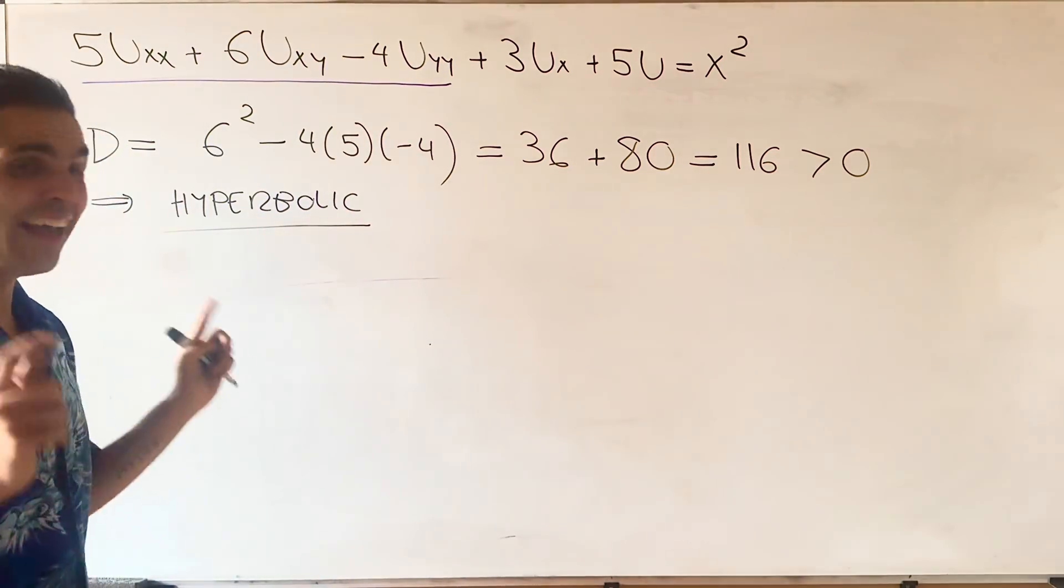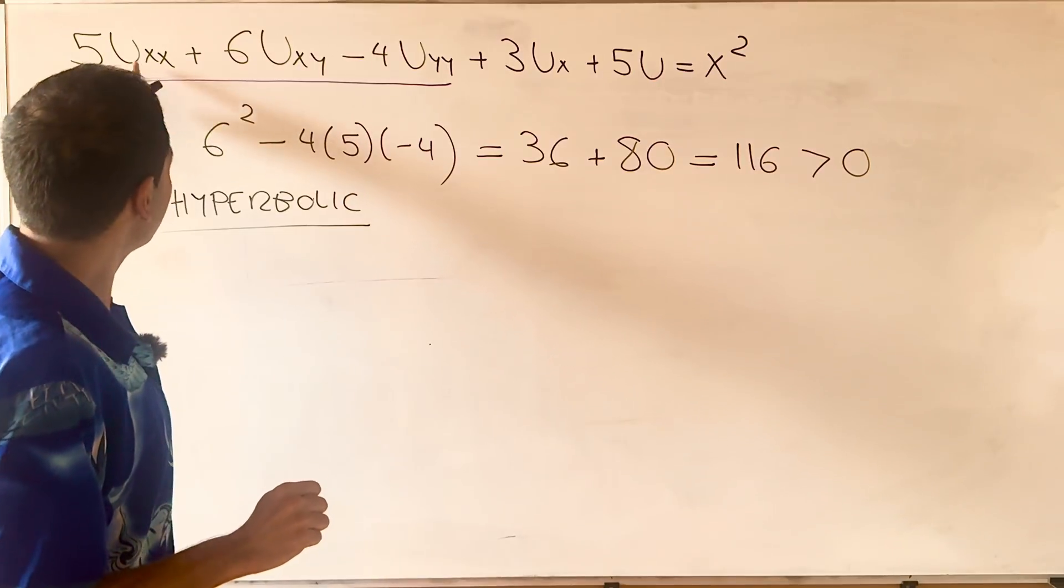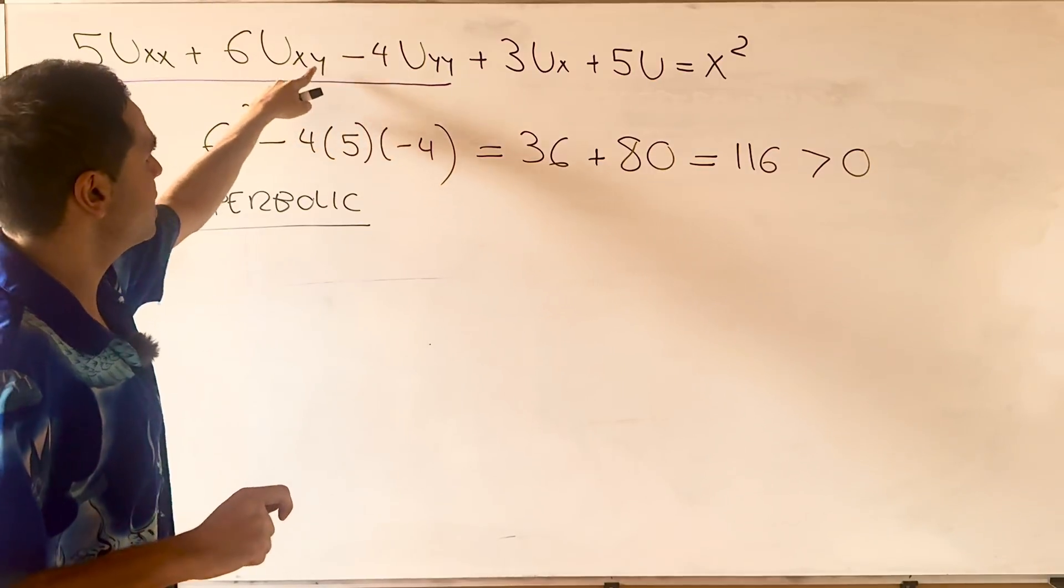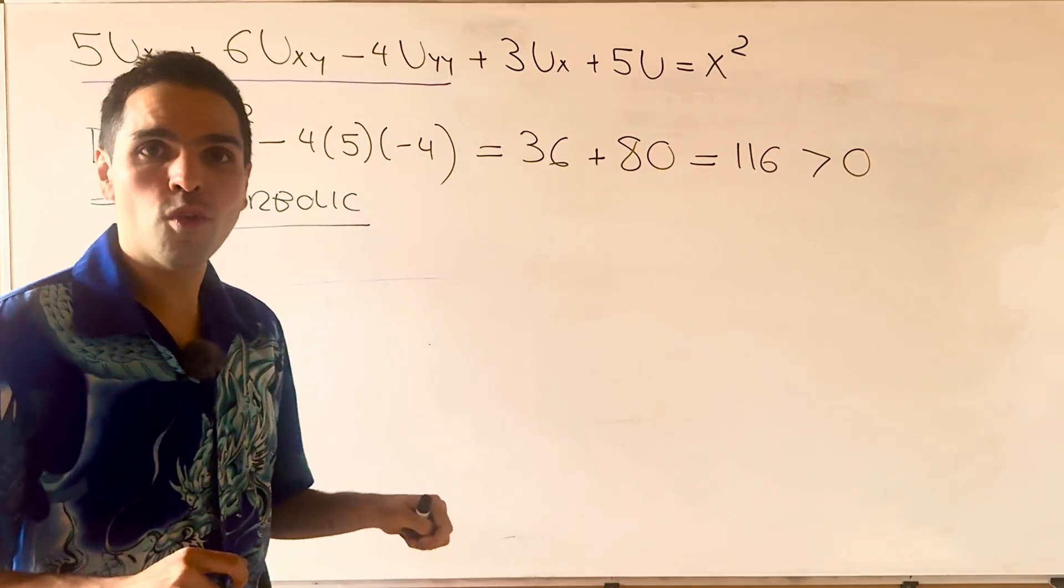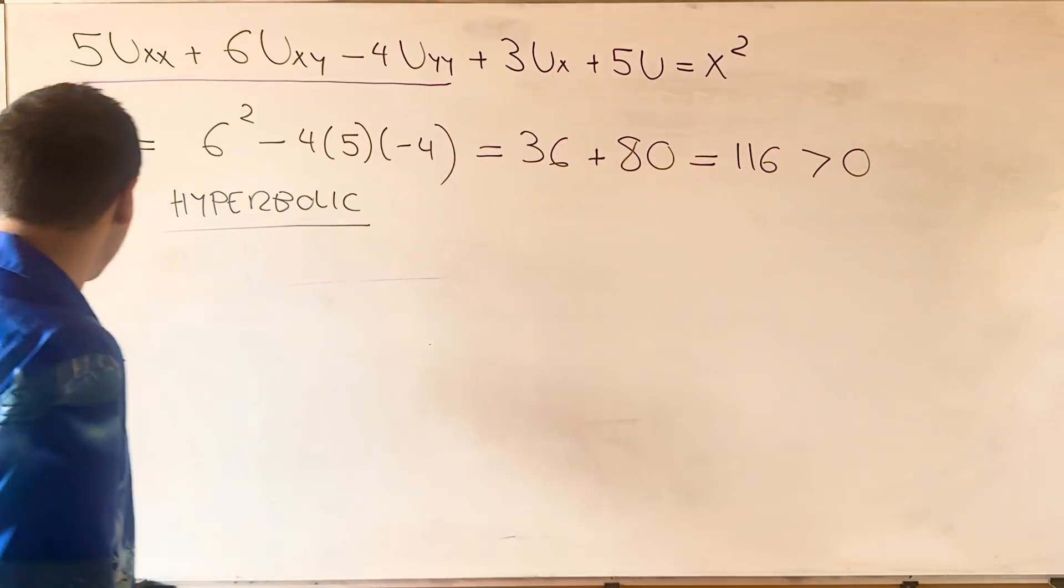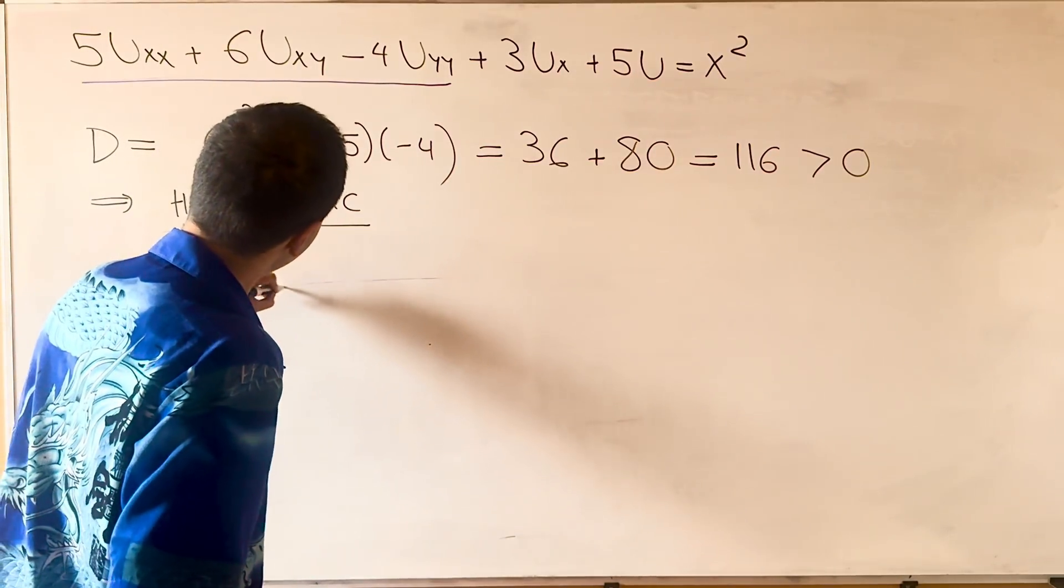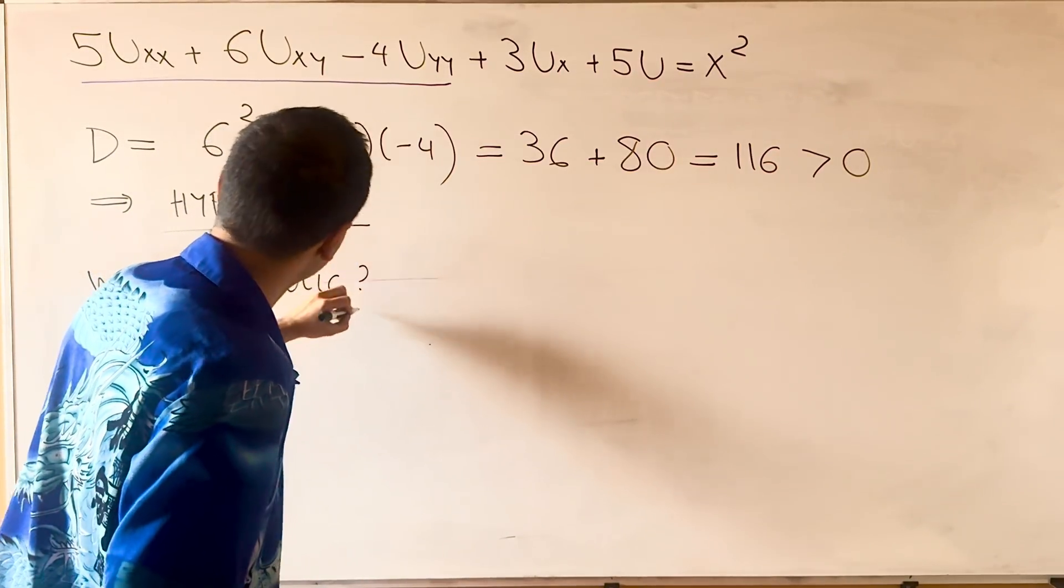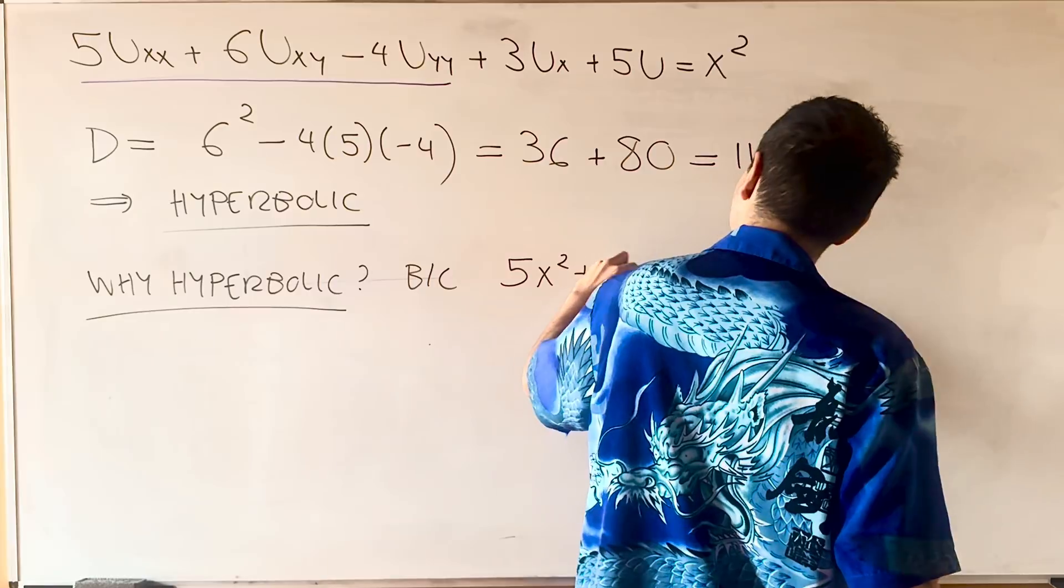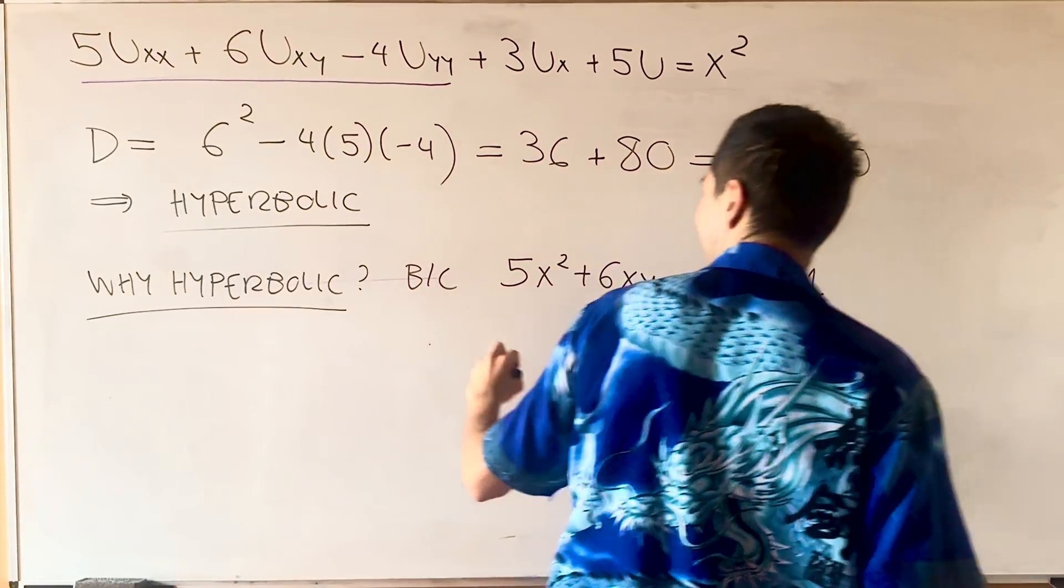Now, why is it called hyperbolic? That's super interesting. It's because if you consider 5X² plus 6XY minus 4Y² equals 1, for example, this is precisely a hyperbola.